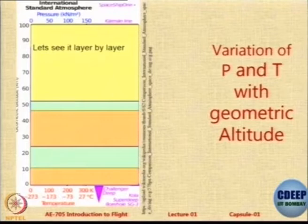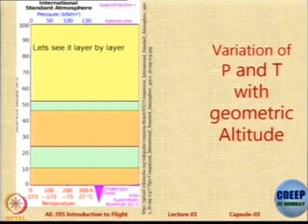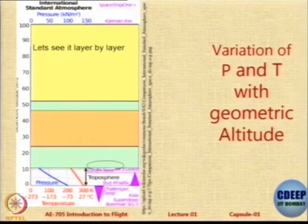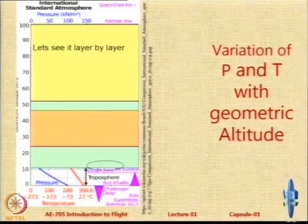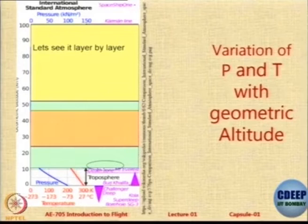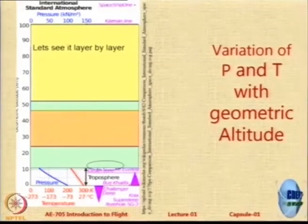I have just hidden the layers and I want you to go layer by layer. We will remove one layer at a time. First we look at the troposphere, which is the bottom most portion. We notice the red line shows that the pressure is reducing from around 288, it reduces linearly up to a value of around 212 Kelvin. The pressure does not change linearly but it reduces — it is a non-linear variation because dP has got rho, and rho is changing with altitude.